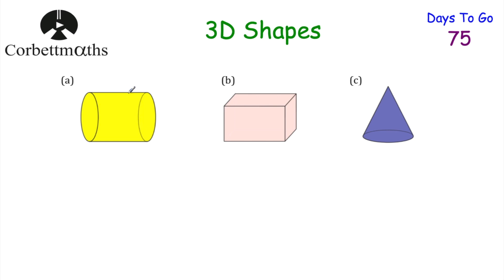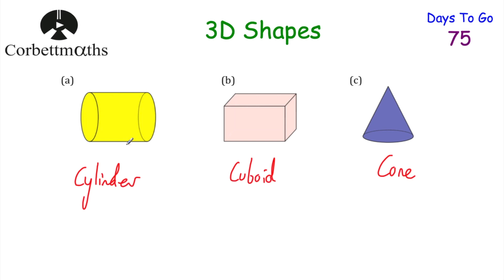Let's name these three-dimensional shapes — pause the video and try now. The first one is a cylinder, the second is a cuboid, and the third is a cone. Well done if you got those right.